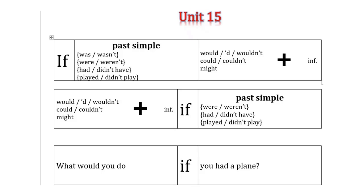كلمة if ممكن تيجي في النص. لو جت في النص: would/wouldn't/could/couldn't/might + infinitive في الأول، وبعدين if وبعدها past simple. Would اختصارها apostrophe d. والنفي wouldn't. Would/wouldn't/could/couldn't/might كلهم بيجيلهم infinitive. مثال: What would you do if you had a plane?